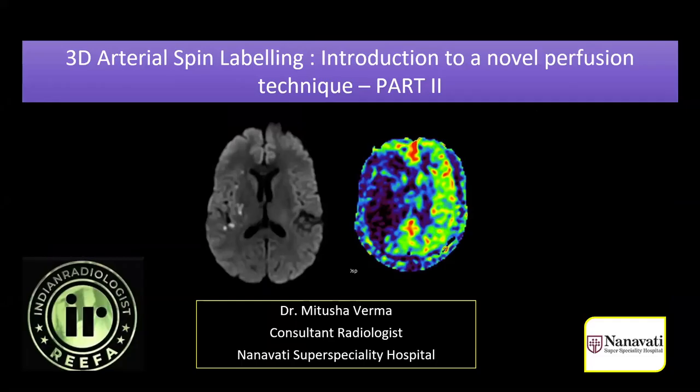The topic which we are going to talk about today is 3D arterial spin labeling. This topic is divided into two parts. In part one of the lecture series, we saw the basics and physics behind it, and we also saw the application of ASL in stroke imaging. In this part, we are going to see ASL and its application in various other pathologies.